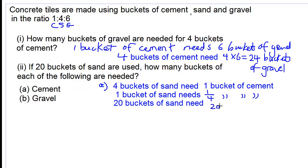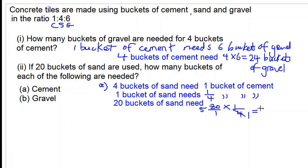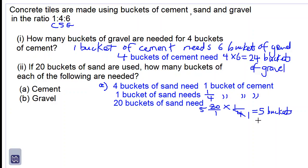We want to find for 20 buckets of sand now. So 20 buckets of sand need: we take the amount for one, which is one quarter, and multiply by 20. So we have 20 times one quarter, which gives us five. So we have five buckets of cement.